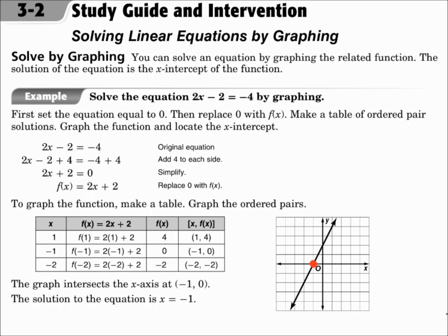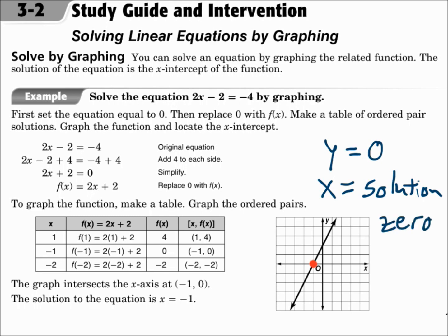For example, on the example question, the x-intercept has a y value of zero. When y equals zero, whatever x is, is the solution. And when we graph these, we're looking for the point on the graph where it crosses the x-axis. That's called the solution, and since it happens when y equals zero, it's also called a zero.